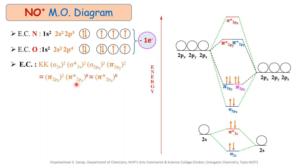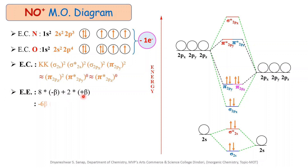There is one electron less in the π*2py orbital compared to nitric oxide. The next important point is the calculation of stabilization energy during the formation of the nitrosyl ion. The energy wall formula is: (electrons in bonding MOs × −β) + (electrons in anti-bonding MOs × +β). There are 8 electrons in bonding MOs and 2 electrons in anti-bonding MOs. Substituting: 8(−β) + 2(+β) = −6β, which is the stabilization energy for the nitrosyl ion.